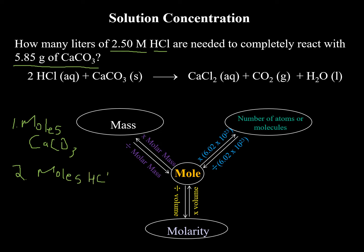From step one you'll have moles of CaCO₃. Use the ratio in the balanced chemical equation to find moles of HCl — it's a 2-to-1 ratio, so multiply by 2. Once you have the moles of HCl and you also have the molarity, you can find the volume of HCl.